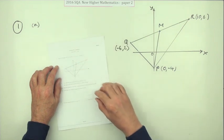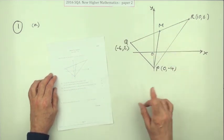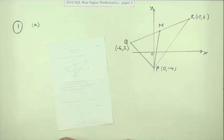So question 1 from paper 2 of the 2016 New Higher Maths, the lines in the triangle question. That's what you want to see, 9 marks.